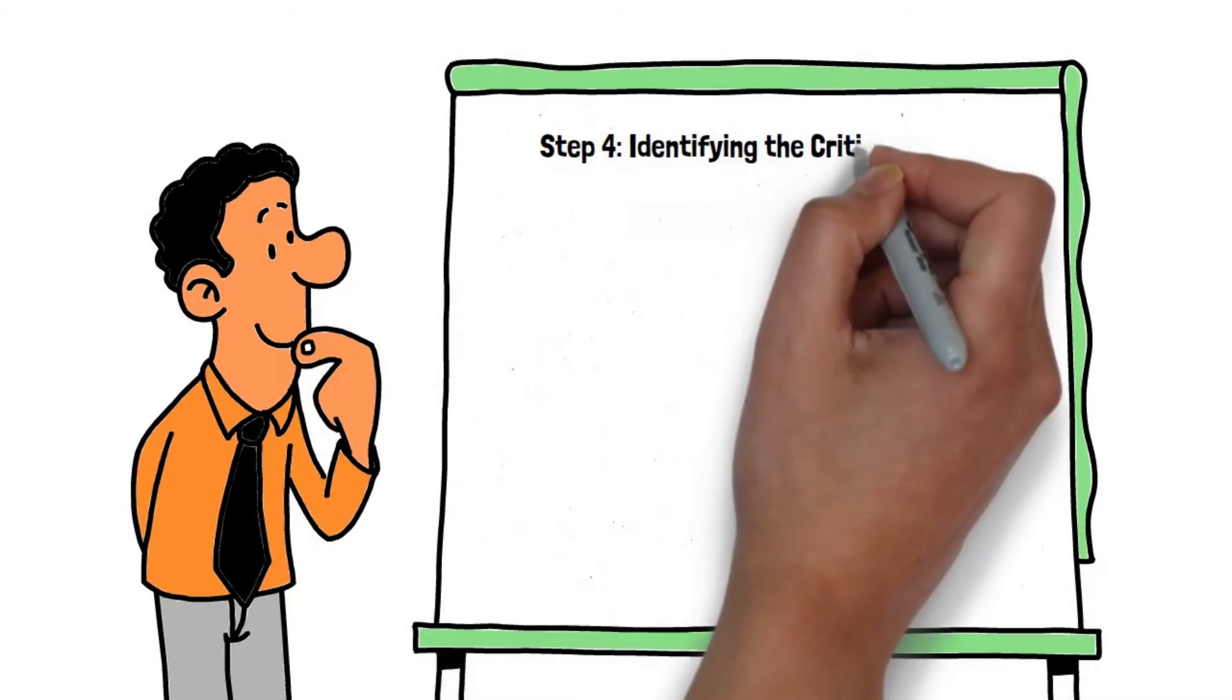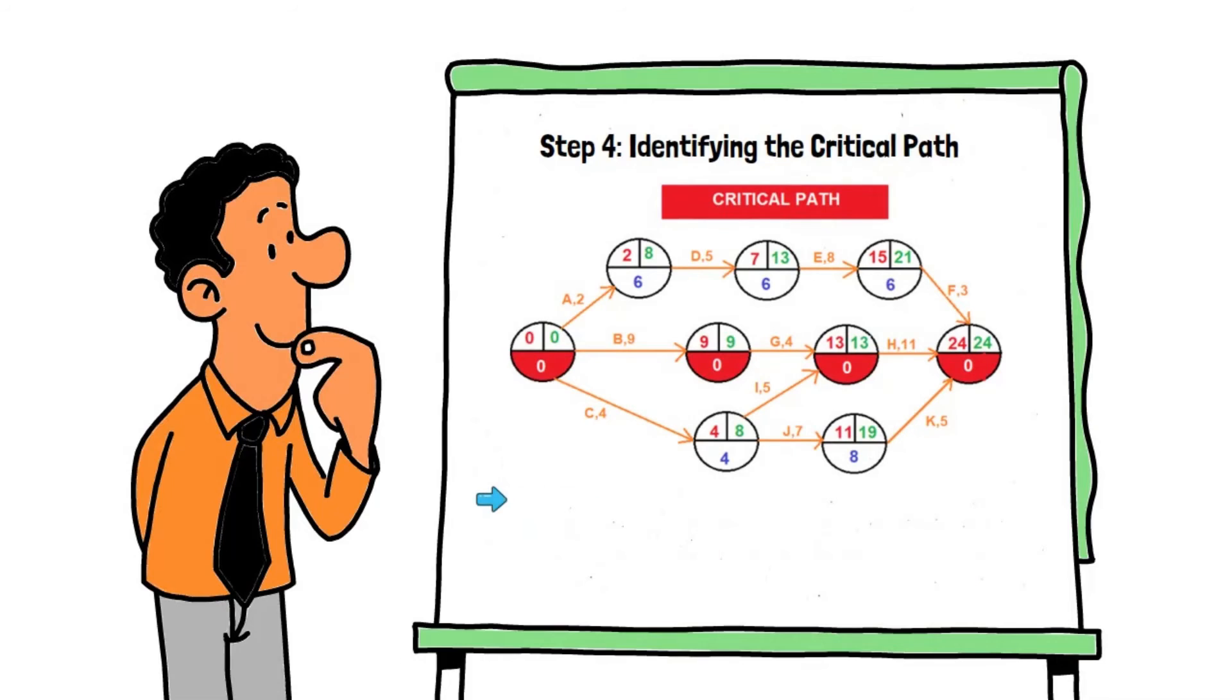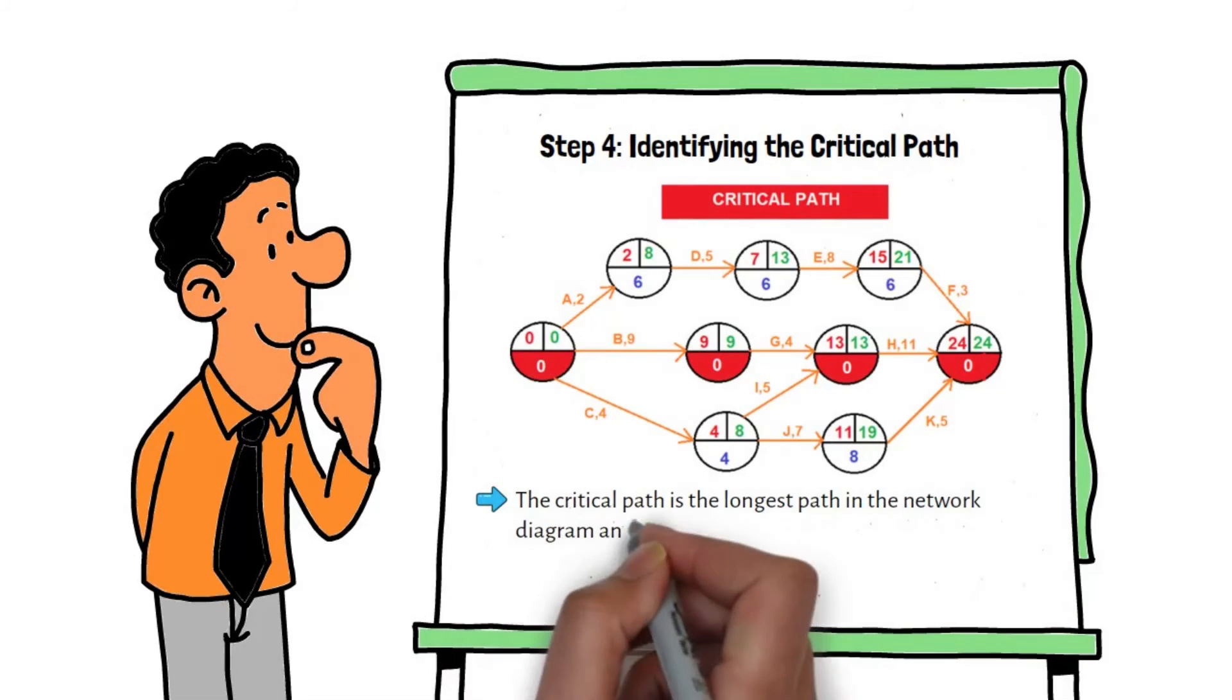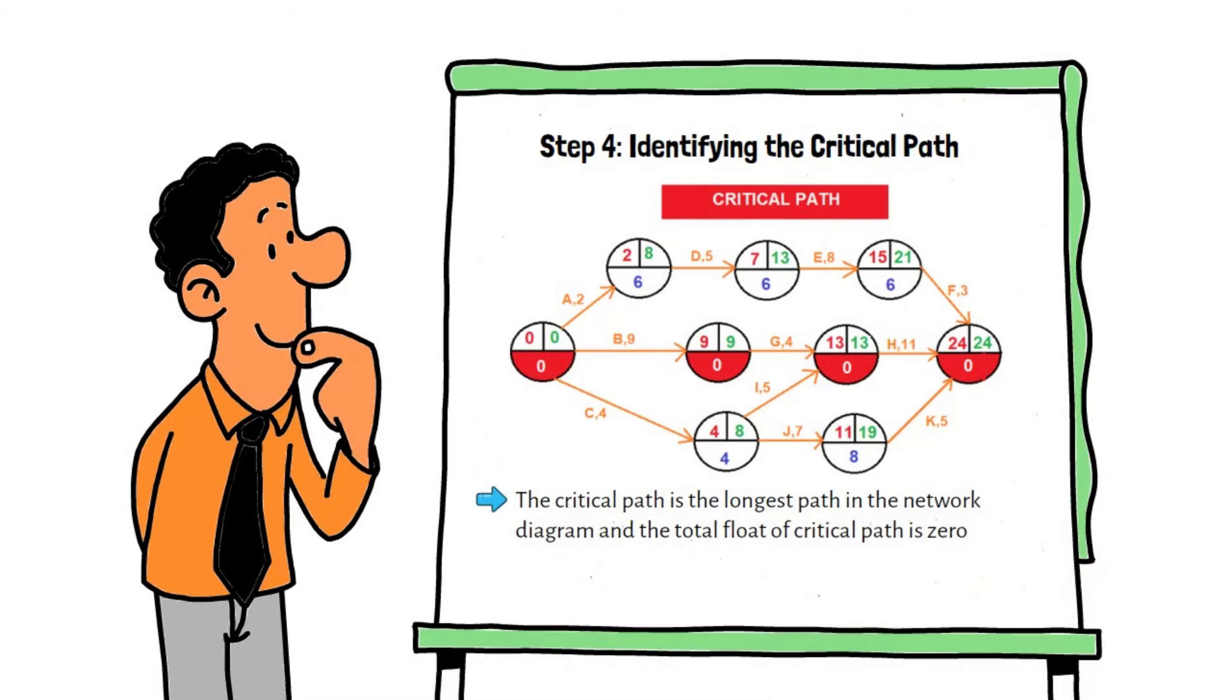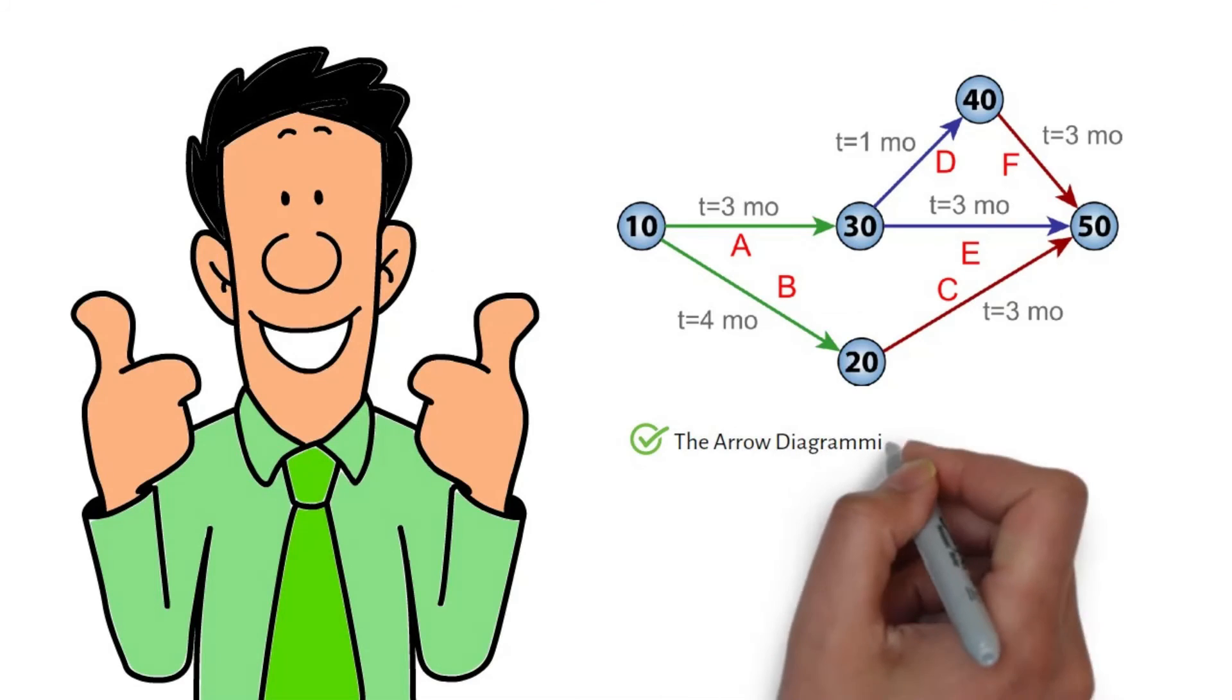Step 4: identifying the critical path. The critical path is the longest path in the network diagram and the total float of critical path is zero. As shown in the schema, the critical path is marked red.